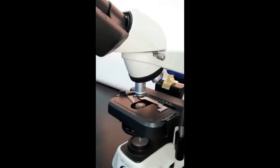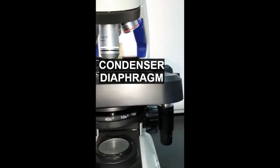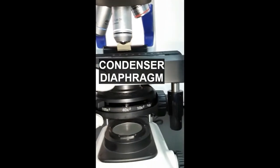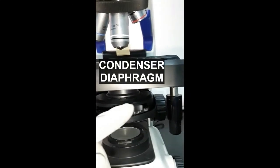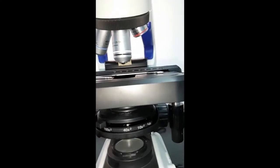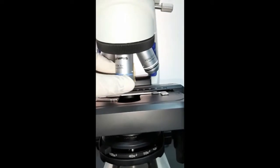The next part is the condenser. These are the lenses that are used to collect the light from the illuminator to the specimen, and it is located underneath the stage. In front of the condenser, you can see a small lever called the iris diaphragm. It controls the light passing through the condenser.